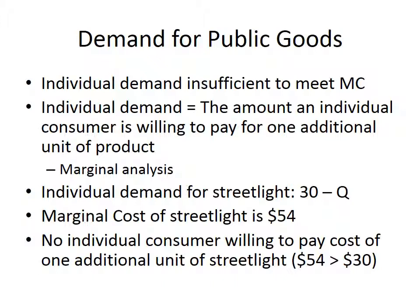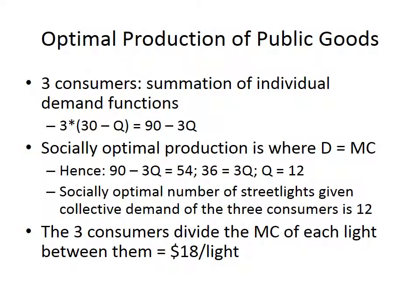There will be no streetlights because each individual's maximum willingness to pay is $30, below the $54 marginal cost. But suppose we have three consumers — me and two neighbors — all of whom want streetlights. The demand function for this public good is the summation of all individual demand functions. Assuming they're identical, with three people each having 30 minus Q, the overall demand is 90 minus 3Q. You can see that this is going to be greater than the marginal cost of producing a streetlight. Let's find the socially optimal level of production.